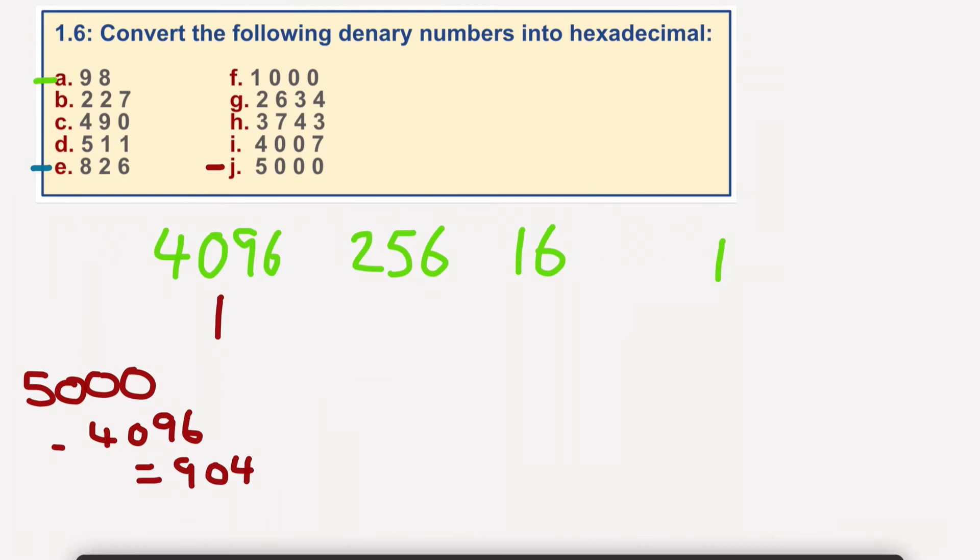5000 take away 4096. Now 256, that must, as before, equal 3. 3 times 256, because 3 times 256 equals 768. So 768, and we'll take that away from that.